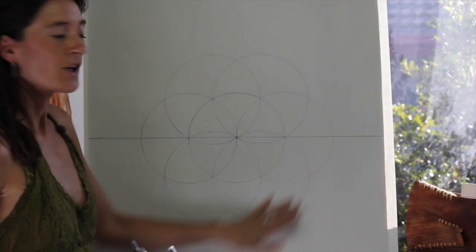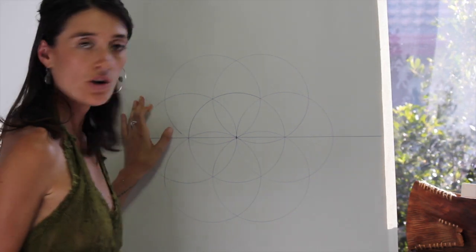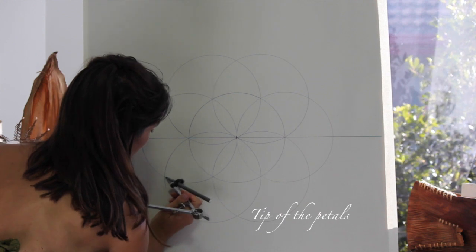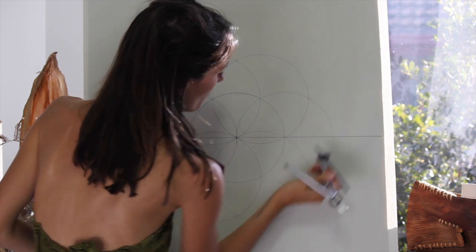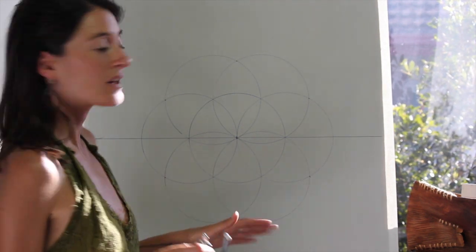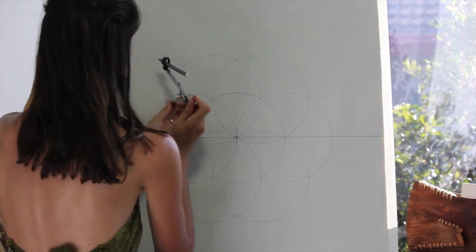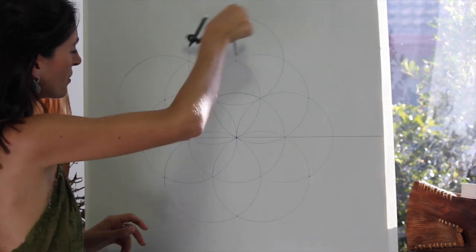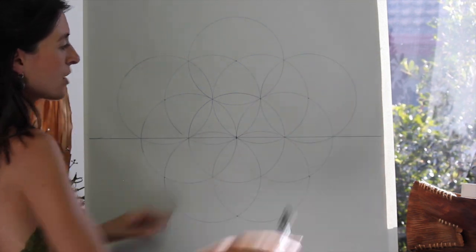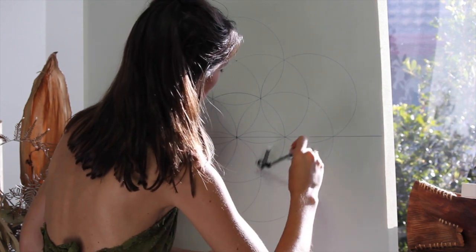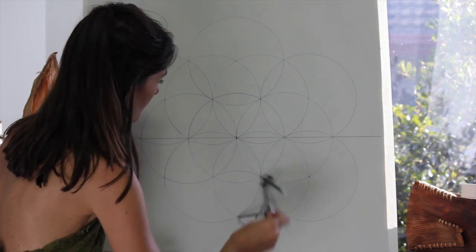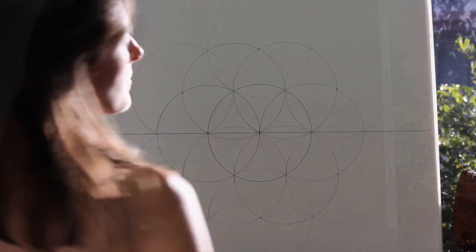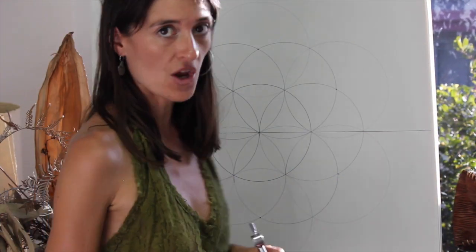We're going to do another layer of circles now. Take note, have a look at your page, look at the intersections on the outside. There are six of them. Mark them one, two, three, four, five, and six. Now we're going to do another layer of six keeping the radius the same size. So I always like to start on the left and work my way around: one, two, three. Focus on those points, work your way around.